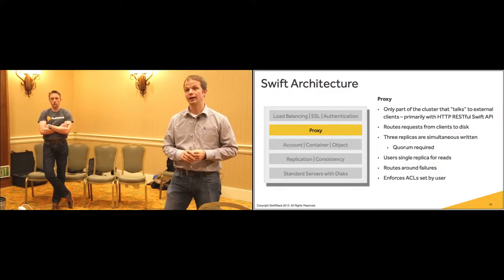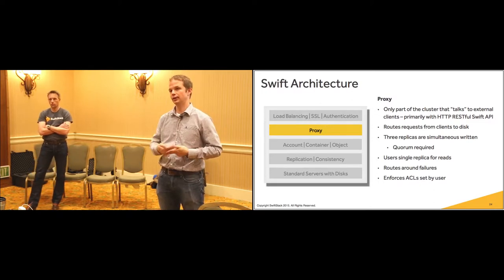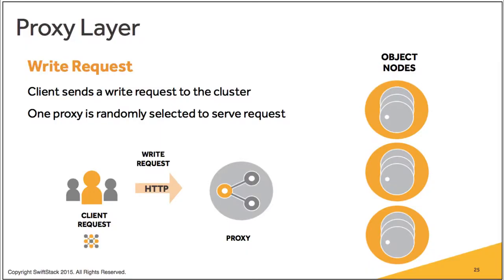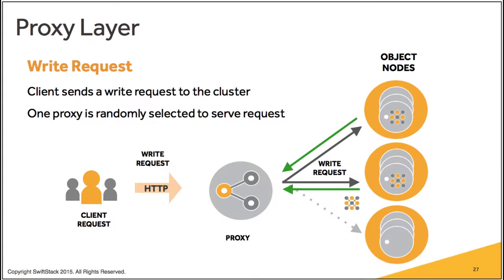A storage policy is a Swift ring mapped to containers on container creation - anything going into that container is bound by that replica count. When a client sends a write request, the load balancer and DNS round-robin determine which proxy the client lands on. You touch one proxy; the write request goes simultaneously to three object nodes. Based on the URL name of your object, a calculation predetermines which object nodes are selected. The proxy waits for two acknowledgements, then acknowledges back to the client.